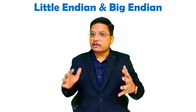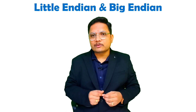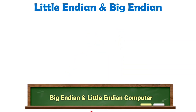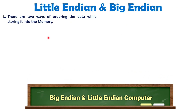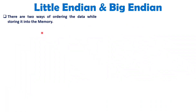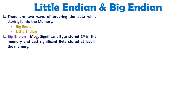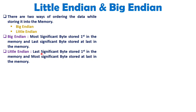I'll explain all those things by example for more clarity. When you talk about ordering of data onto memory with Little Endian and Big Endian: with Big Endian, you store the most significant byte first in memory, and at last you store the least significant byte. With Little Endian architecture, the least significant byte is stored first in memory, and at last you store the most significant byte.